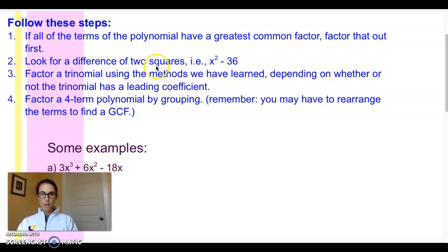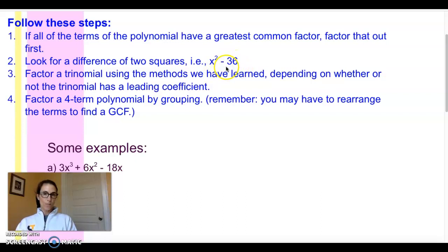The next thing you want to look for — whether you've already pulled out a greatest common factor or you're just looking at the polynomial — is whether it's a difference of two squares. For instance, x² minus 36 would factor to x plus 6 times x minus 6. Quickly recognizing a difference of two squares can save you a lot of time.